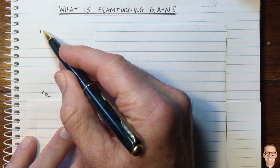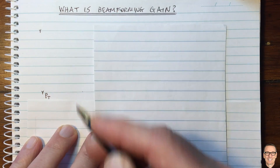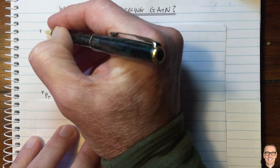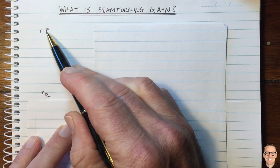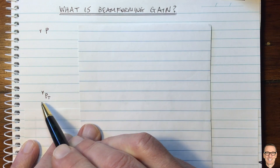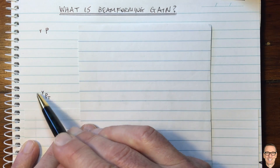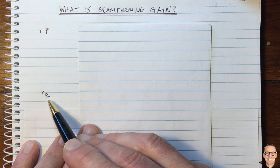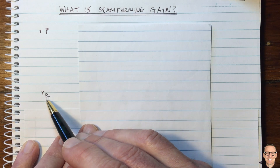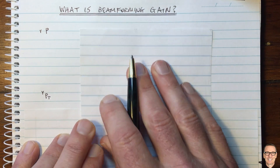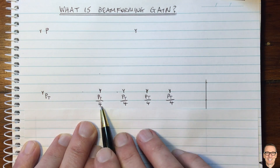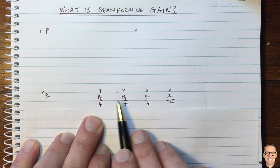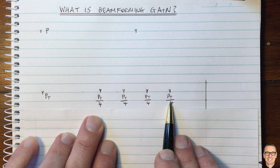And here we've got a receiving antenna, and let's assume that over this distance, the receiving power is capital P. Now let's think of the beamforming scenario, where we have multiple transmit antennas and we split the power between those antennas. Here's an example where we're considering four antennas, so each antenna transmits with the power of PT divided by four.